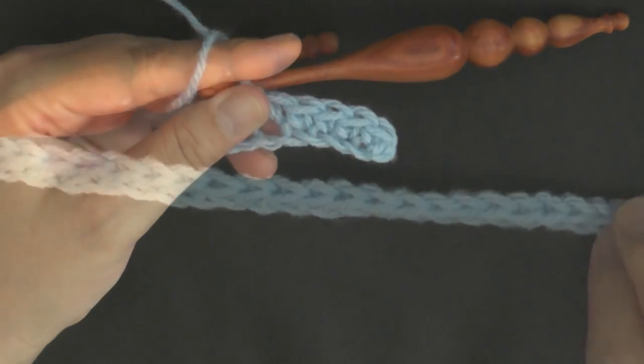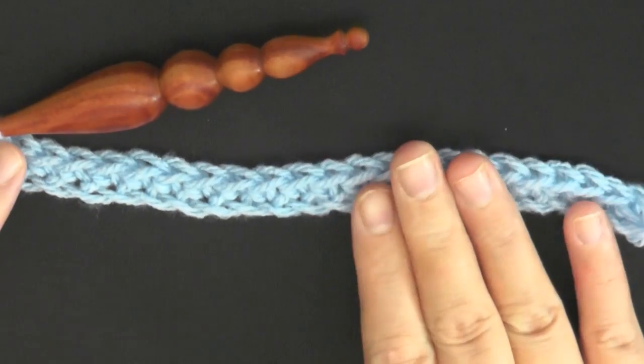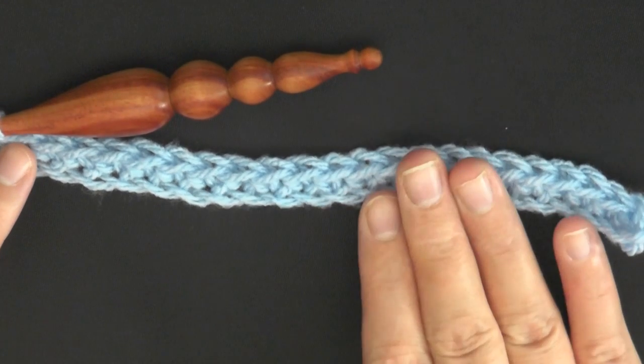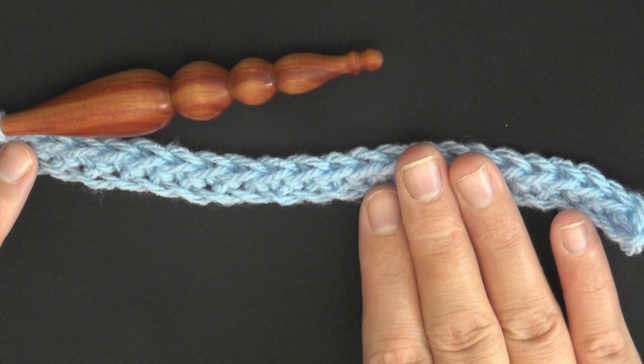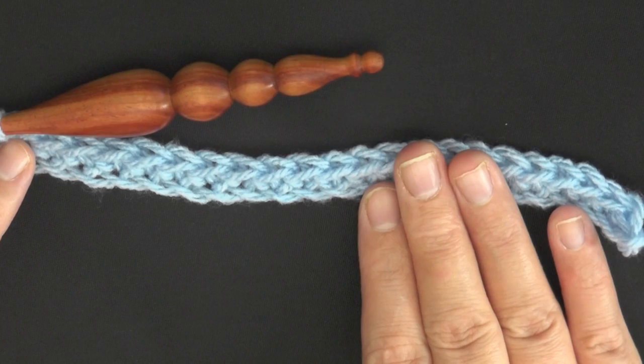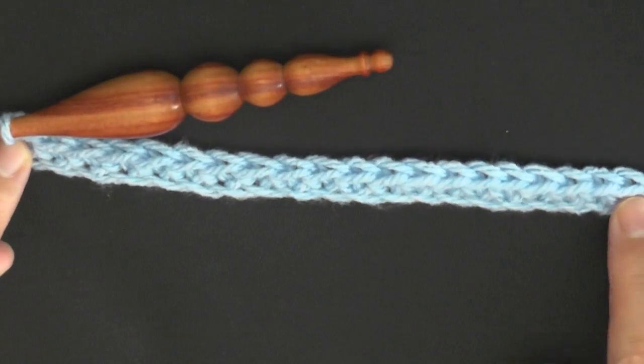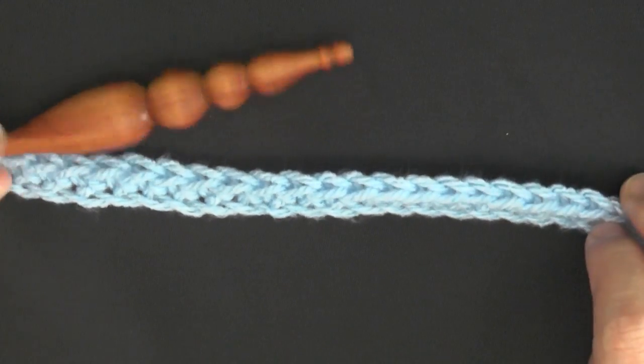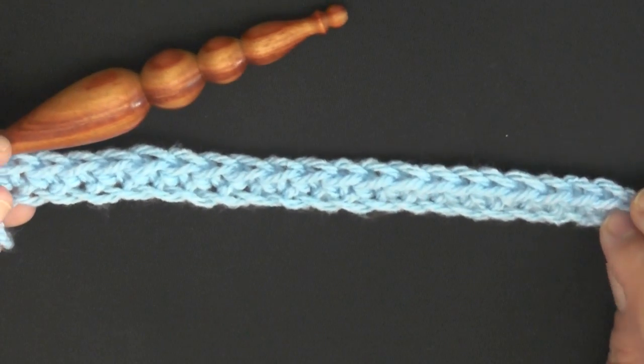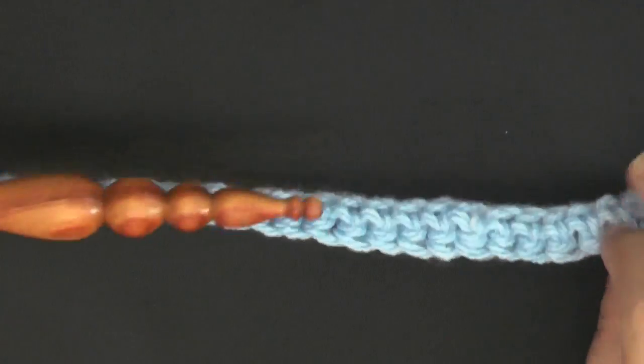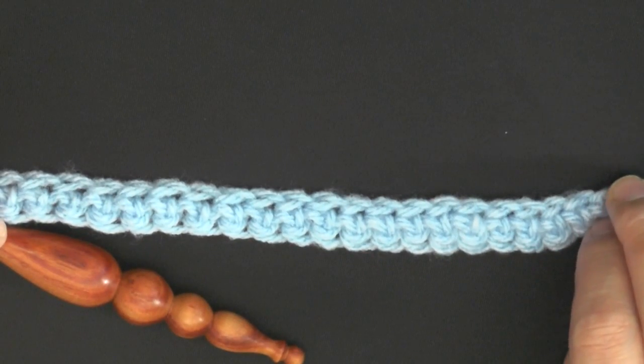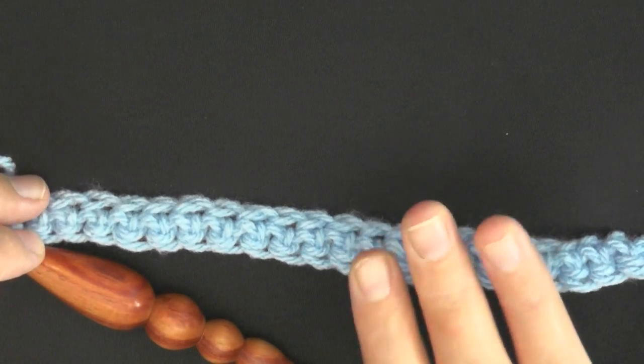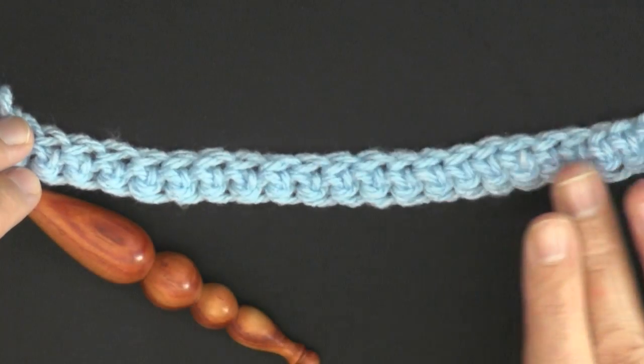Okay, so the pattern doesn't call for a row of single crochets, but I've realized when you're working with shells especially, it's best to have a base, a stronger base than just the chain stitch. The next row I'll be starting the shells, but it'll be on the back side of the single crochet when we're starting the next row, which will ultimately be your front side.